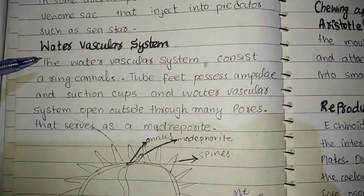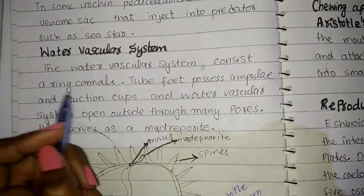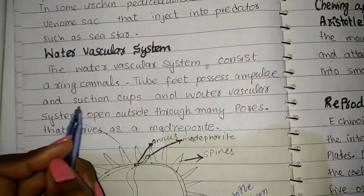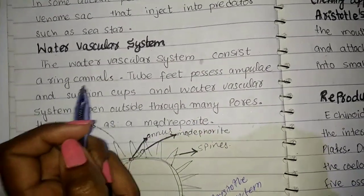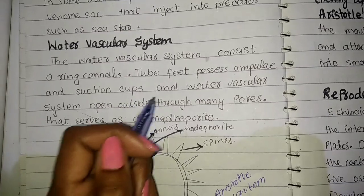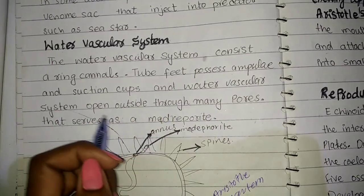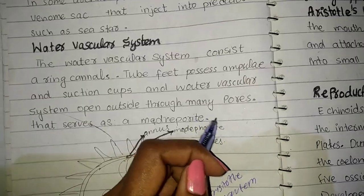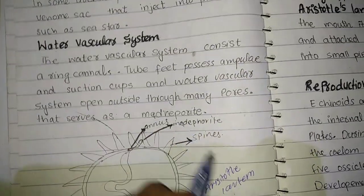The water vascular system consists of a ring canal, tube feet, ampulla, and suction cups, as discussed in the last video. The water vascular system is very detailed and opens to the outside through many pores via the madreporite.